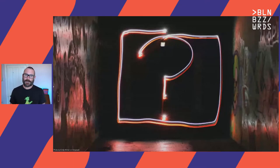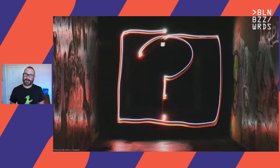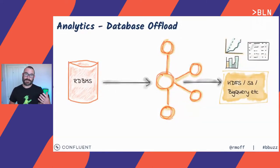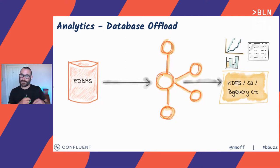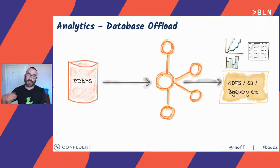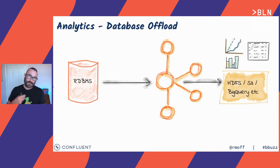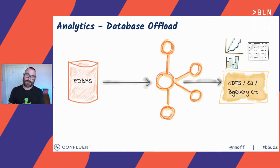Why would you even want to get data from your database into Kafka? Perhaps that data is quite happy in the database. But it turns out that getting data from your databases into Kafka powers a bunch of really useful things. Sometimes people want to build analytics against data in the database, and querying it directly has overhead and performance concerns. So you offload it — put it somewhere else, probably a cloud data warehouse or cloud object store. We can use Kafka as the piece in the middle to buffer and push that data out to the places where we want to use it.